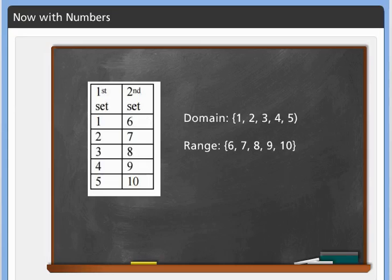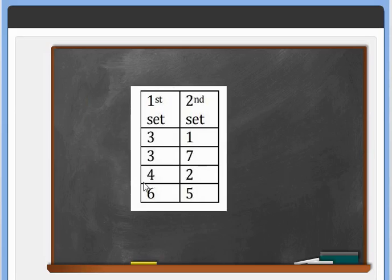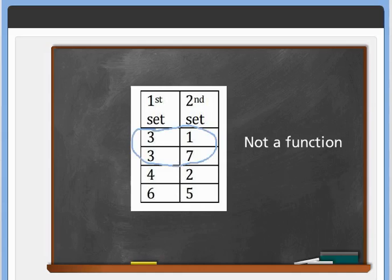Let's look at one more table example. In the first set we have 3, 4, and 6. We have 3 matched with 1, 3 matched with 7, 4 matched with 2, and 5 matched with 11. Notice that 3 is matched with both 1 and 7 — that's a problem. Our rule says each thing from the first set can only be matched with one thing in the second set, so this is not a function.